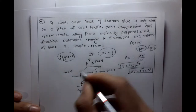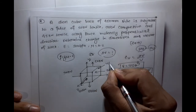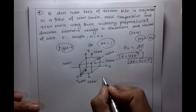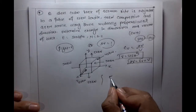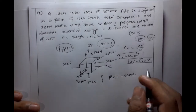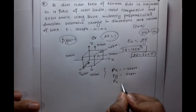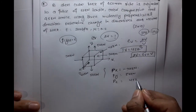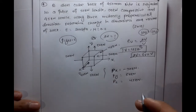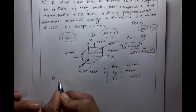Along the Y direction we mark 45 kilonewton. Sigma X corresponds to Px = minus 90 kilonewton. Py = 50 kilonewton. Pz = 45 kilonewton. So 50 and 45 are tensile, and 90 is compressive.